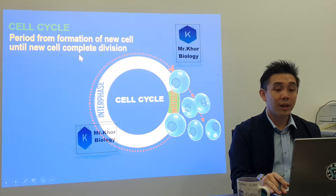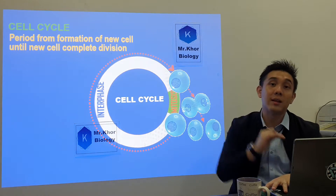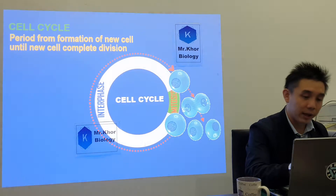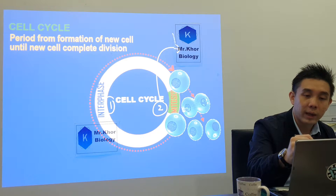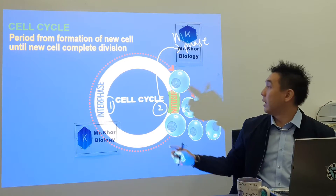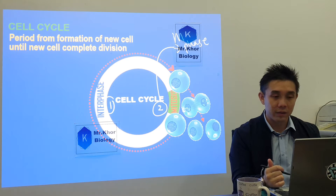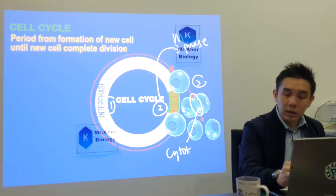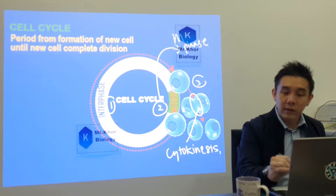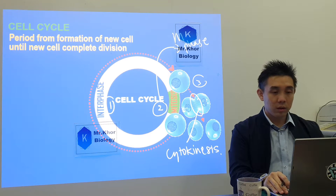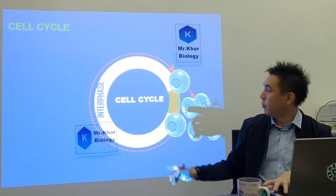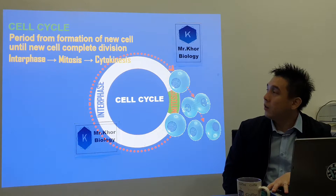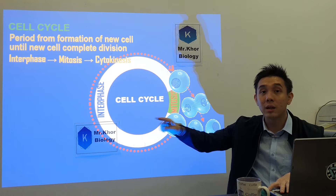There are basically three parts to the cell cycle: number one, interphase; number two, mitosis — also called M-phase, which can be mitosis or meiosis; and the last one, the splitting of the cytoplasm, known as cytokinesis. So the cell cycle involves interphase, mitosis, and cytokinesis.